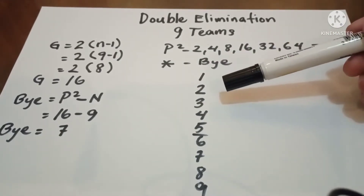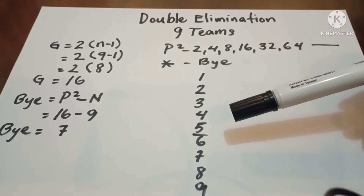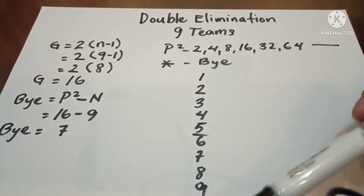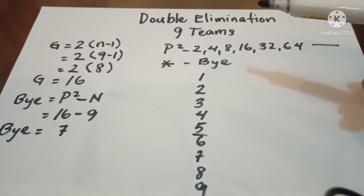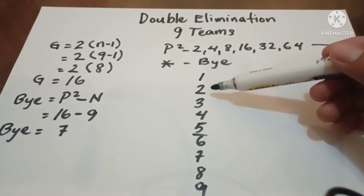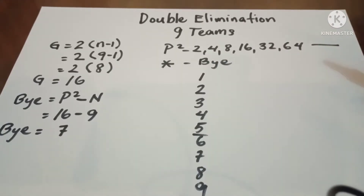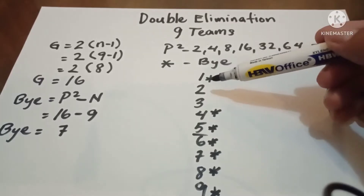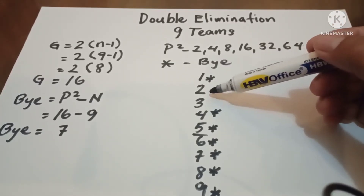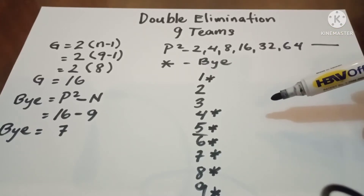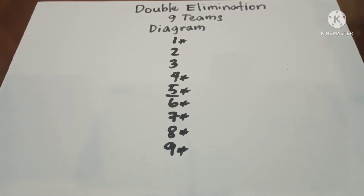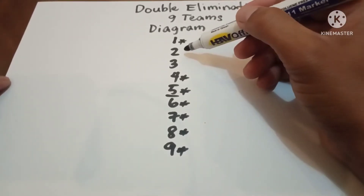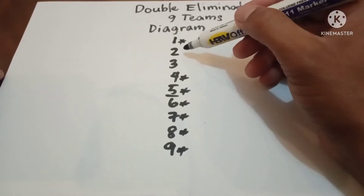In 9 teams, we bracket the entries into 2: 5 in the upper bracket and 4 in the lower bracket. Take note that we should always write all the number of entries vertically downward. Let us now place the byes properly. Since we have 7 byes, we have 2 competing teams in the first round: teams 2 and 3.